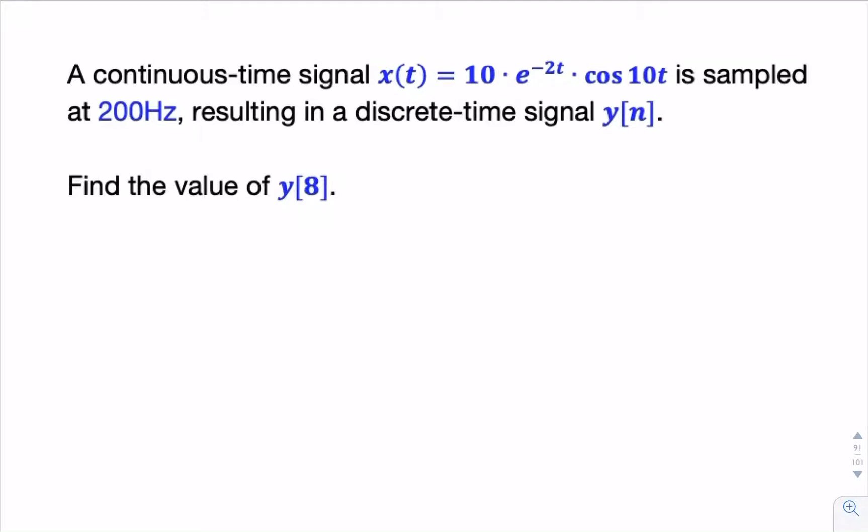So remember, when going from continuous time to discrete time, all we need to do is replace t with n times uppercase T, the sample period. We can get uppercase T simply by inverting the sampling rate. So T is 1 over 200.